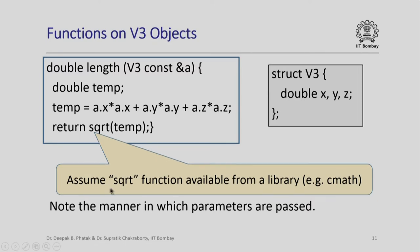We are going to assume that the square root function is available from a library — for example, cmath — and if you include that library you can access the square root function.